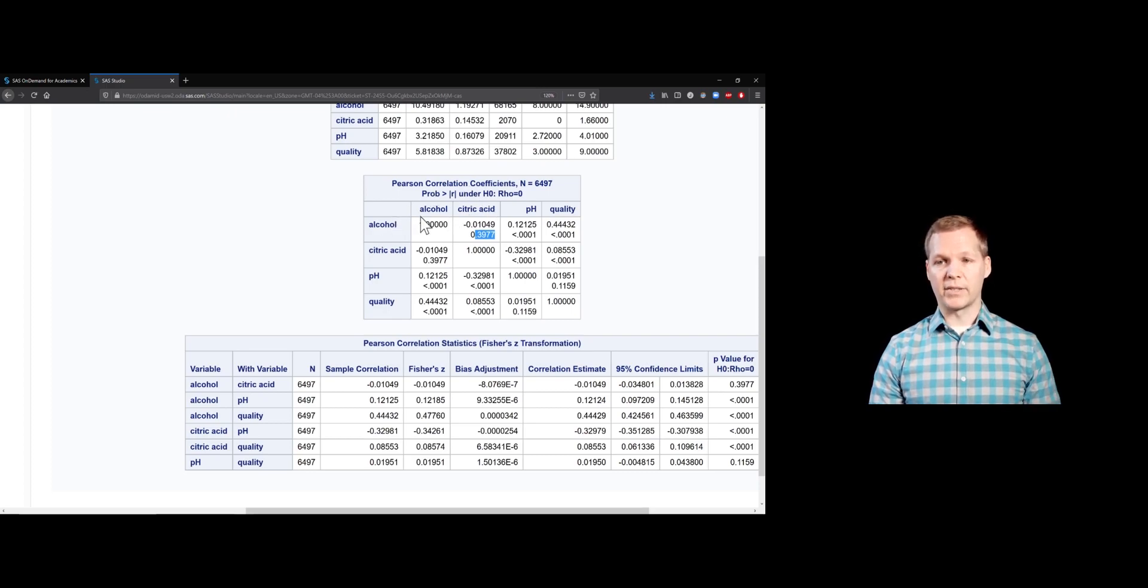If we look at alcohol versus pH, that has a much higher sample correlation, but it's still a pretty weak relationship, 0.12. But that is significantly different from zero. So we have a significant correlation between alcohol and pH. And between alcohol and quality, that's pretty high. That's up to what I would refer to as more of a moderate relationship. And that is significantly different from zero. That's how we can read that table up there.